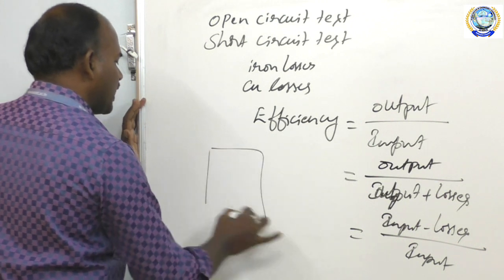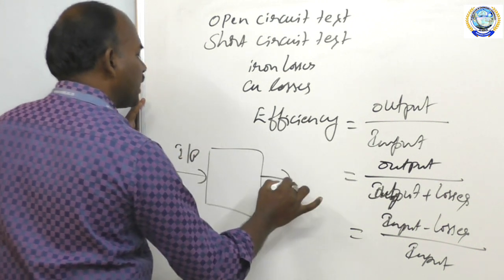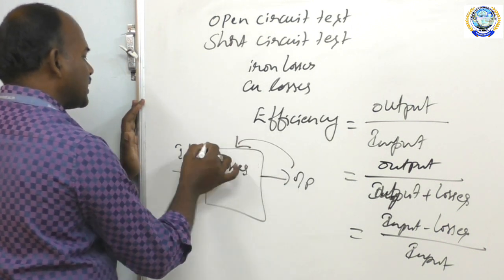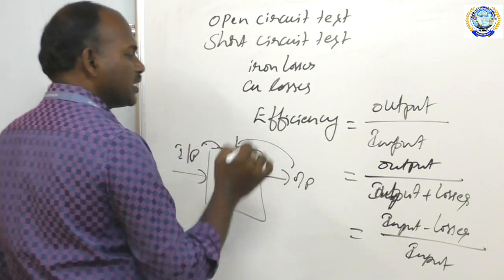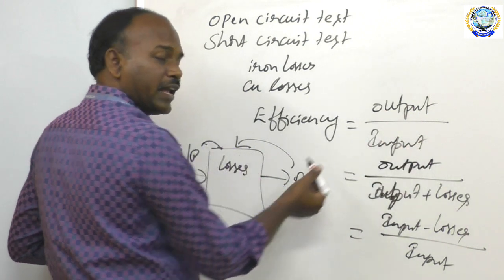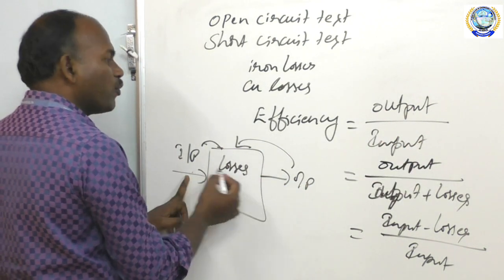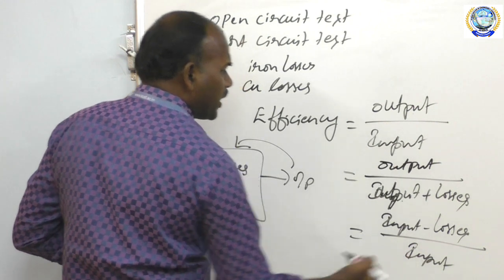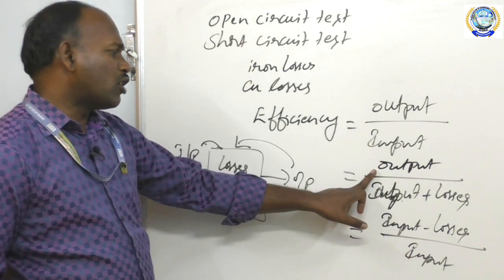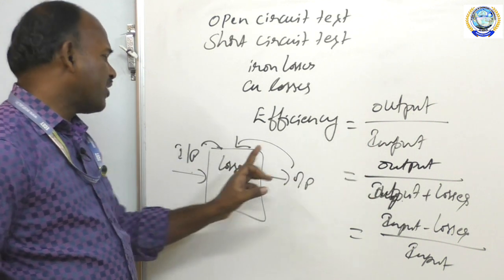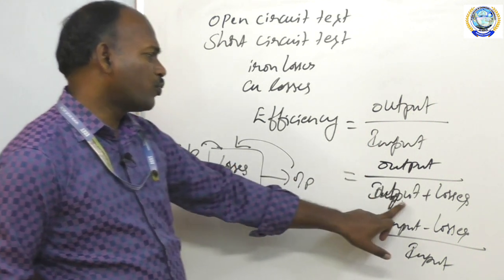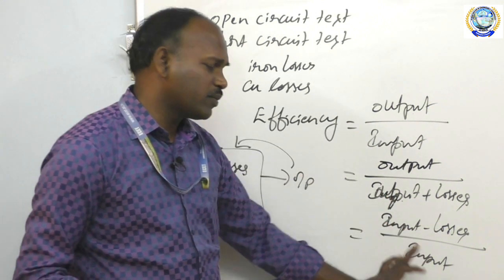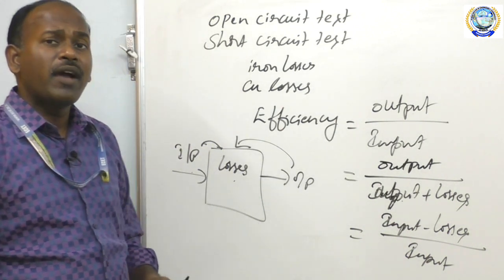When input is applied, output is received and losses occur. Output plus losses equals input; input minus losses equals output. So the efficiency formula is: output by input, where output can be written as (input minus losses), giving output/(output + losses) or (input − losses)/input. This form is helpful for determining the maximum efficiency condition.